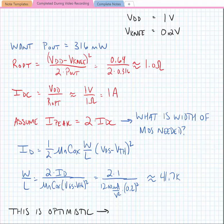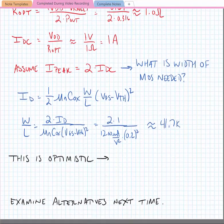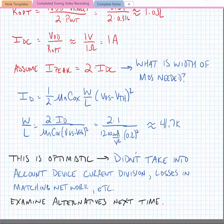We should point out that this is an optimistic estimate. We left out a lot of things. For instance, we didn't take into account that large devices have large parasitics at their drain, and hence there's a very large current division. We also didn't take into account losses in the matching network.